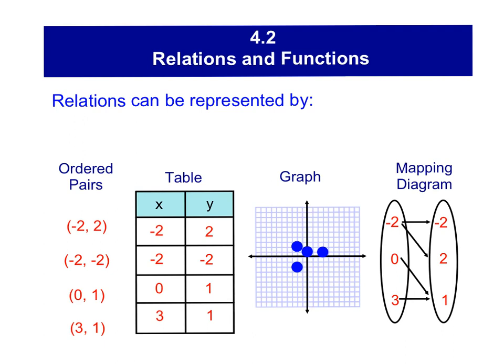So that leads us into relations and functions, our 4.2 lesson. Relations can be represented many different ways. You guys have probably seen most of these before. Ordered pairs. When you have an ordered pair, just keep in mind that you do have an x and a y. The x is always the first number. The y is always the second number.